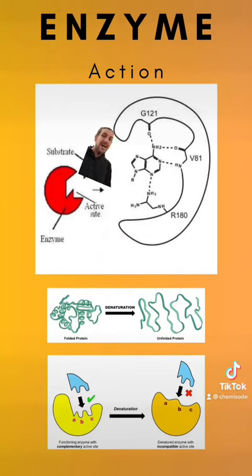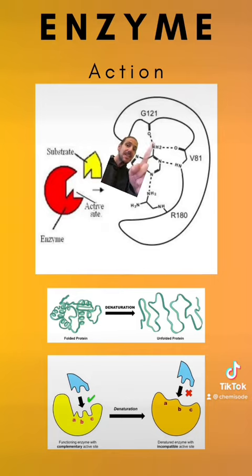Now just imagine what would happen to the function of this enzyme if it changed shape. Well, what would happen is that these intermolecular forces would no longer be able to be created and therefore the substrate would no longer be able to bind to the enzyme and therefore the reaction will no longer be able to be catalyzed. So the reaction rate will drop or the reaction will actually cease to happen at all.